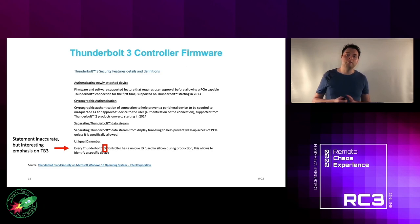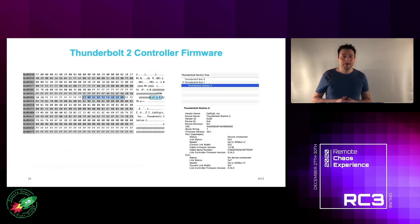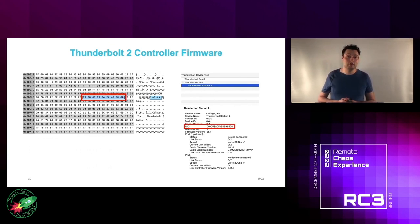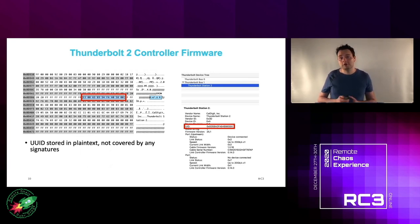Looking at the Intel whitepaper on Thunderbolt 3 security, there was an interesting section stating: 'Every Thunderbolt 3 controller has a unique ID fused in silicon during production.' We already know this is not fully true because we can change two out of eight bytes. But there was an interesting emphasis on 'Thunderbolt 3.' Looking at Thunderbolt 2 controller firmware, the UUID is there in plain text with no signature coverage at all.